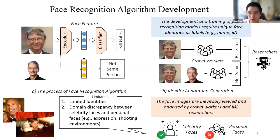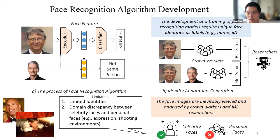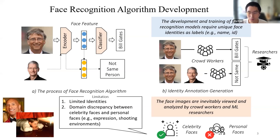The face recognition algorithm can also be used for face verification. For example, given a new face image never seen before by the model, we want to determine if two images are from the same person. We encode both images to high-dimensional vectors and calculate their similarity based on a distance metric such as cosine similarity. Face recognition algorithms map input images to identities, which means training such a model requires identity information of face images as training labels.